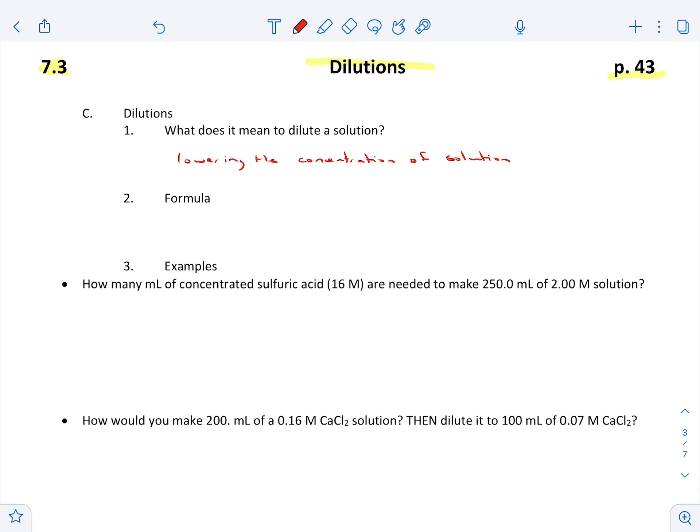All right, so formula: M1V1 equals M2V2. M1 is molarity, V1 is volume, M2 molarity, V2 volume. So it's a very simple formula, it's kind of straightforward.